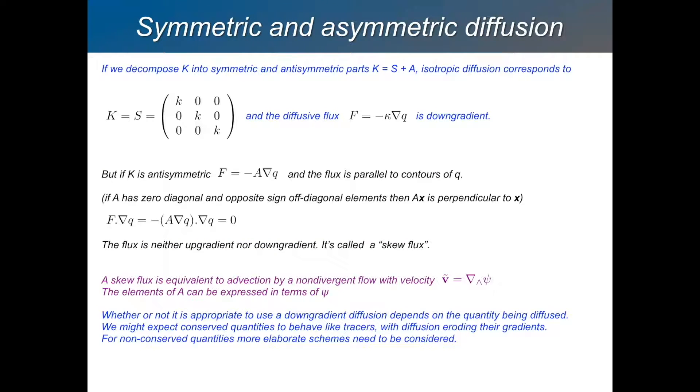The simplest specification for K is that it's the same in all directions. So that's isotropic. And if that's the case, then this 3 by 3 matrix, which is K, is just a diagonal matrix with a constant same value down the diagonal. And that is just the straightforward isotropic down gradient diffusion. The flux is just minus the constant times the gradient.